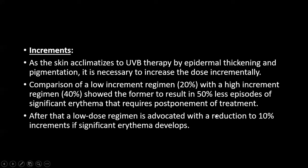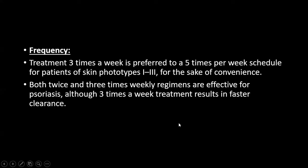For a 20% dose increment: if the current dose is 100 millijoules per centimeter squared, a 20% increment means increasing by 20 millijoules per centimeter squared each session — so 100, 120, 140, 160, 180, and so on. The frequency of treatment with narrowband UVB is 3 times a week, preferred over 5 times a week especially for skin phototypes 1 to 3 for convenience. Both twice and three times a week regimens are effective for psoriasis, although 3 times a week is more effective than 2 times a week.